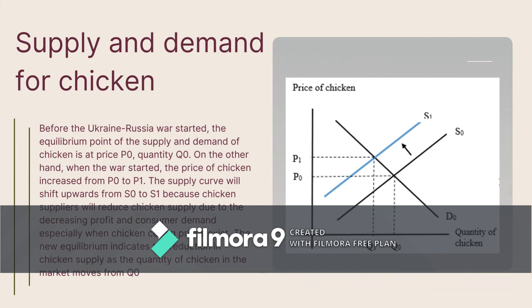Question 3b: Explain how the alternative market is impacted and how supply and demand are influenced. The equilibrium point for chicken supply and demand was at price P0, quantity Q0. When the war started, the price of chicken increased from P0 to P1. Due to decreasing profit and consumer demand, chicken suppliers will reduce supply, shifting the supply curve upward from S0 to S1, with quantity moving from Q0 to Q1.